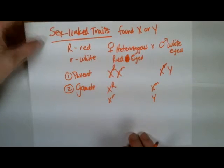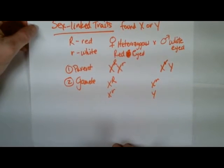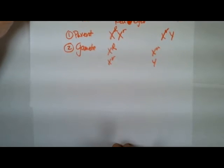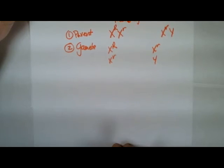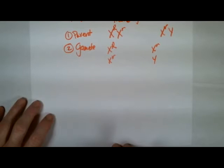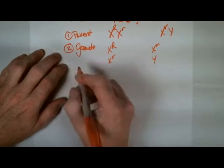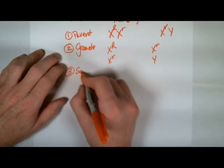And so as we walk through the problem, try to predict what the offspring are going to be like, we need to be able to understand what the possible gametes would be for these two organisms. Now, three, let's produce the square,